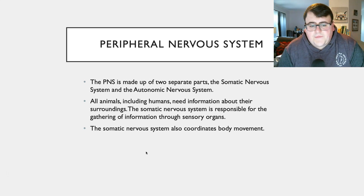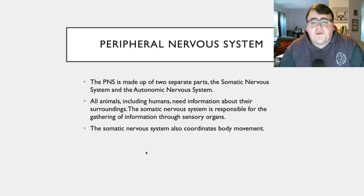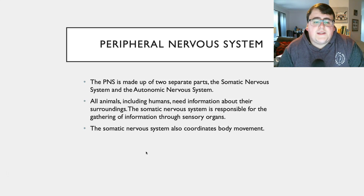The peripheral nervous system is actually made up of two different parts: the somatic nervous system and the autonomic nervous system.